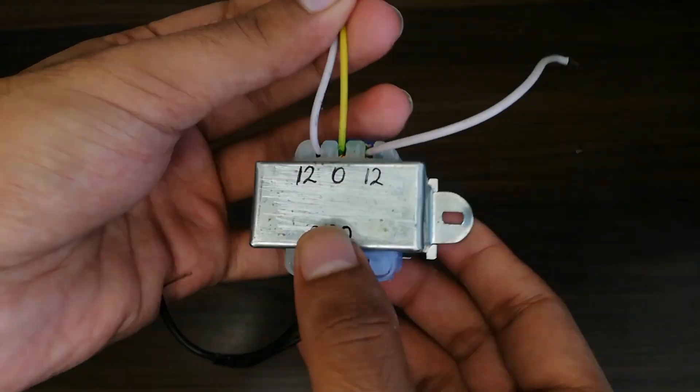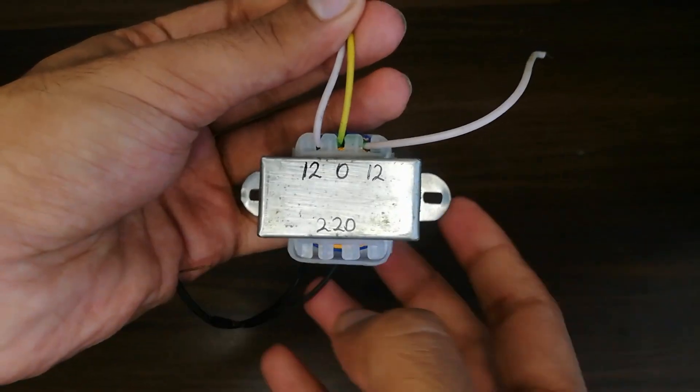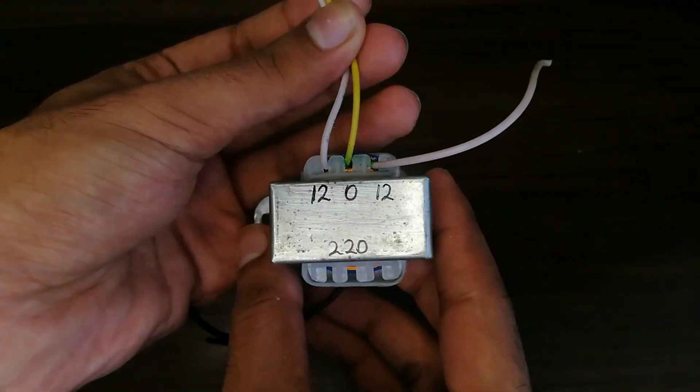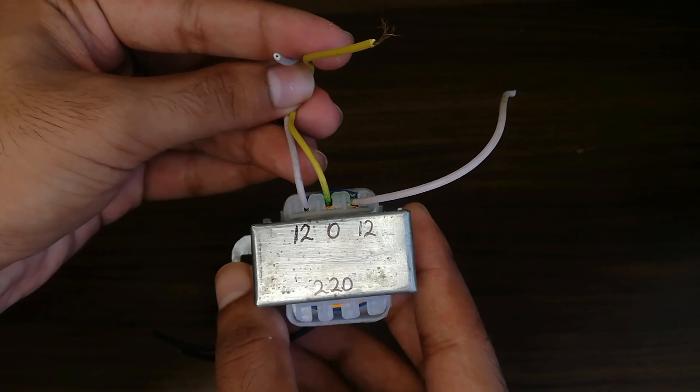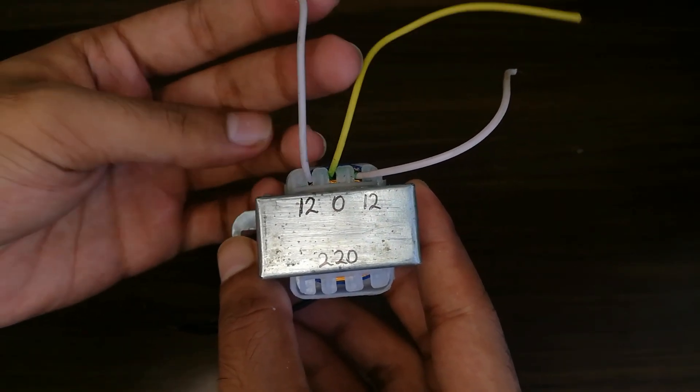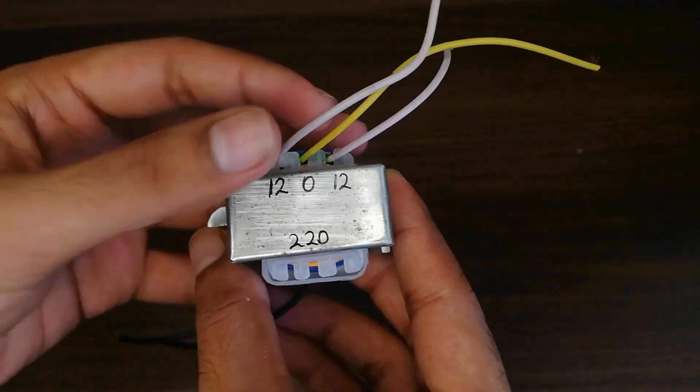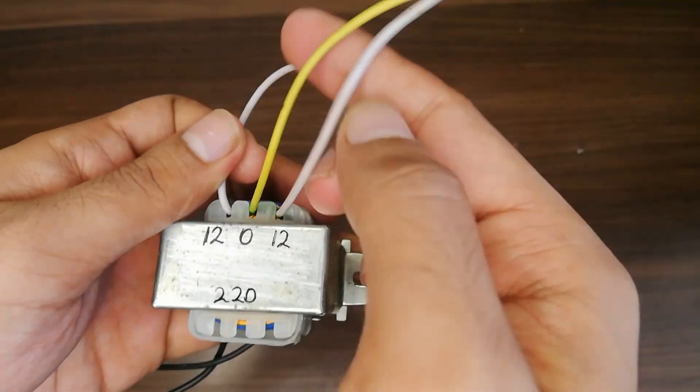However, ignoring the center tap wire and just using the coil end wires, which are the white ones, will provide the rated 24 volts at the output.